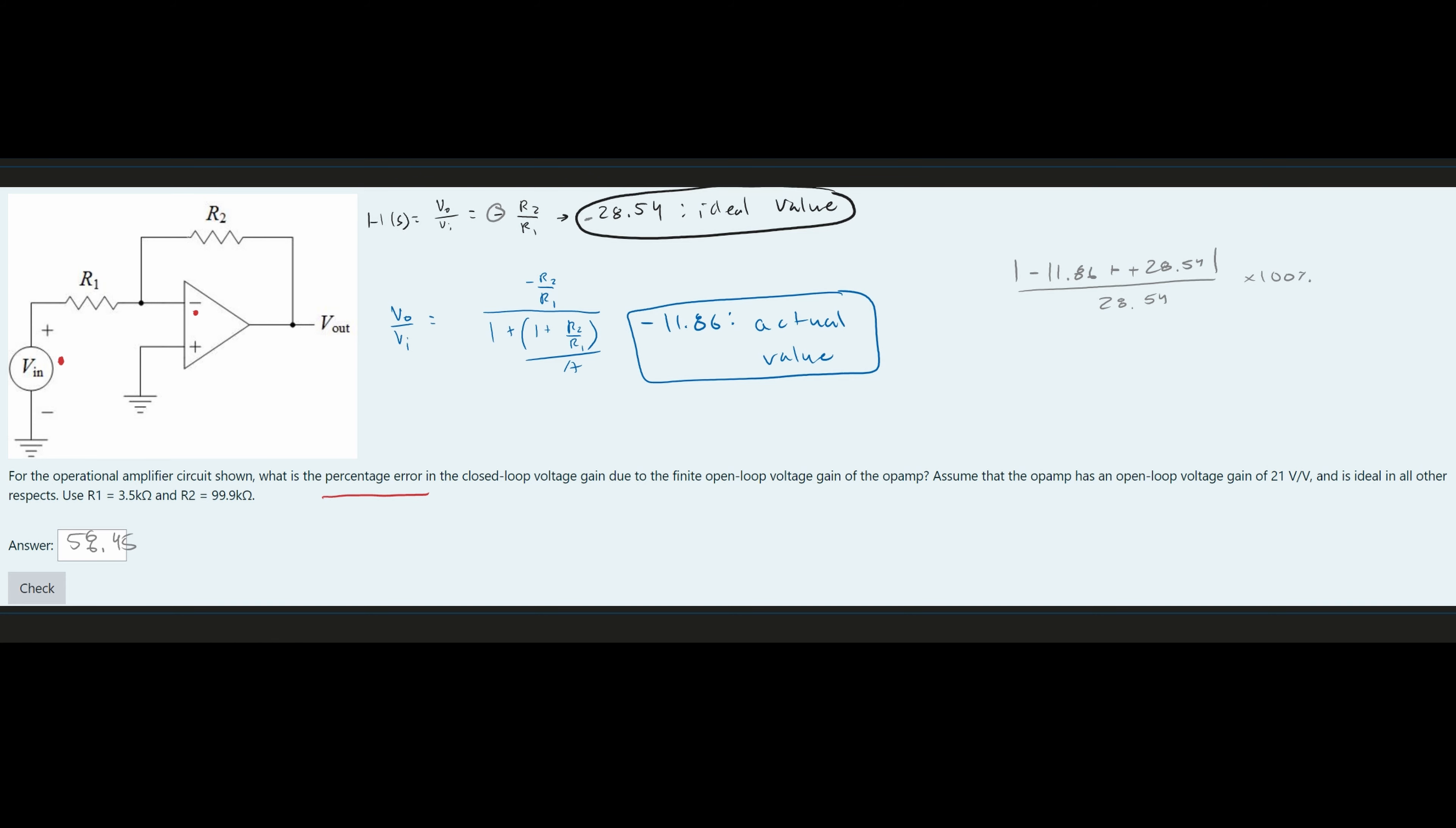Now, this is not our correct answer. Whenever we're calculating the gain, we're going to want it lower than what the value we have. So we know our actual value is negative 11.86, and our ideal value is negative 28.54. So obviously, our calculation is a lot lower. And that's where the negative comes from.